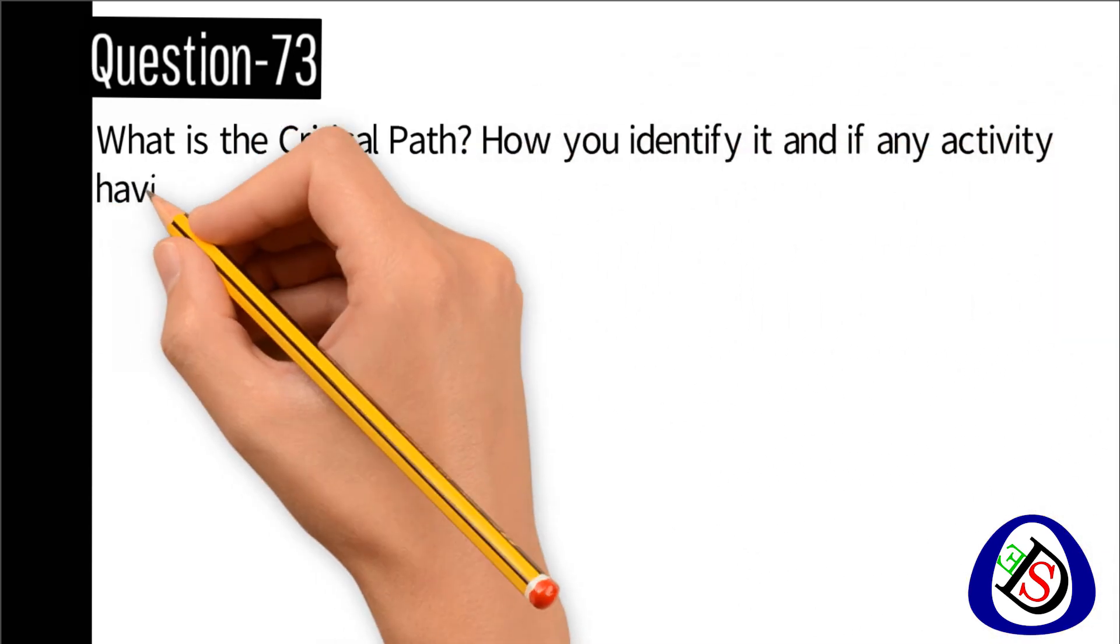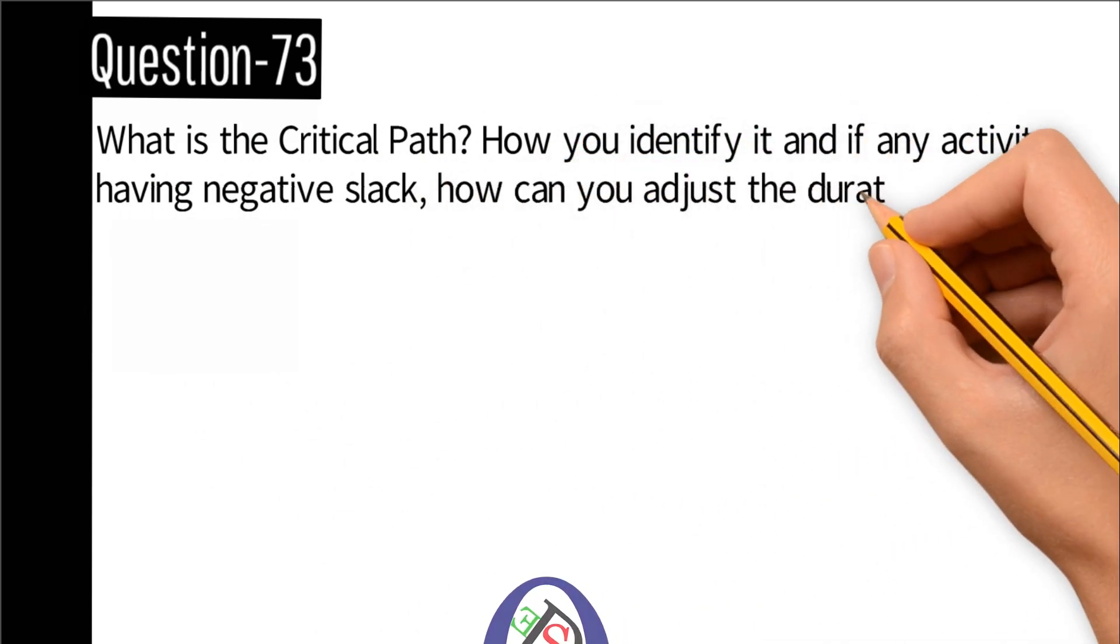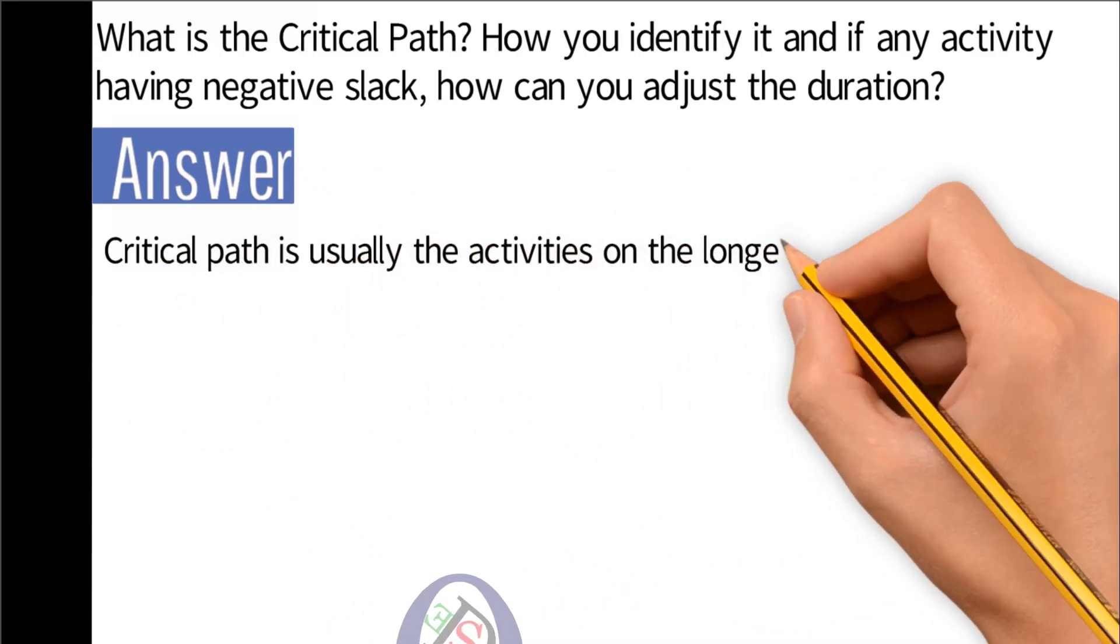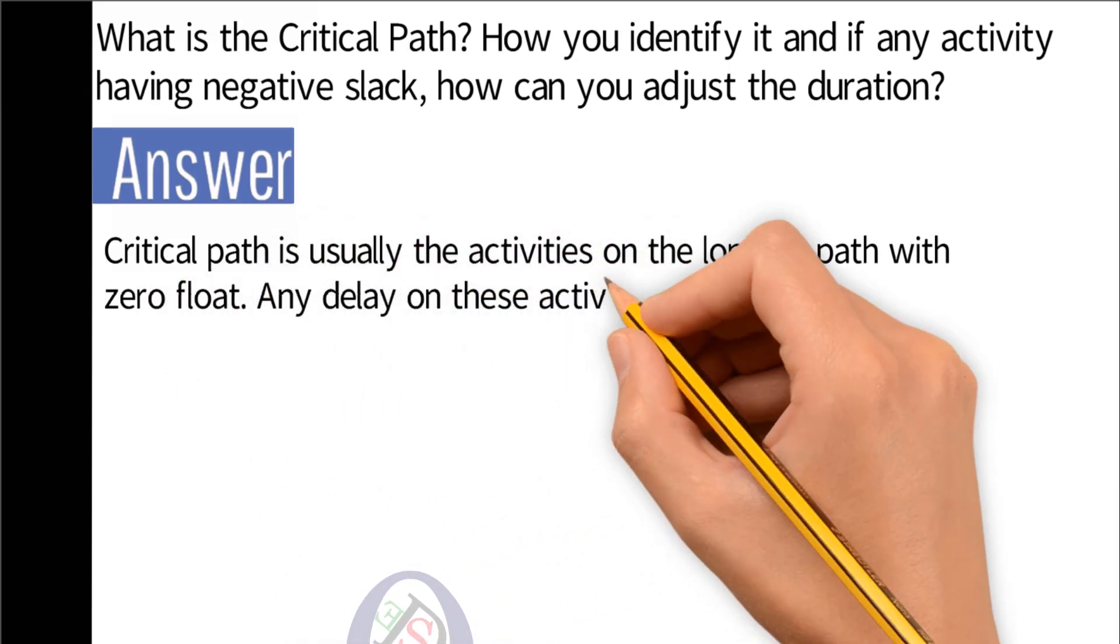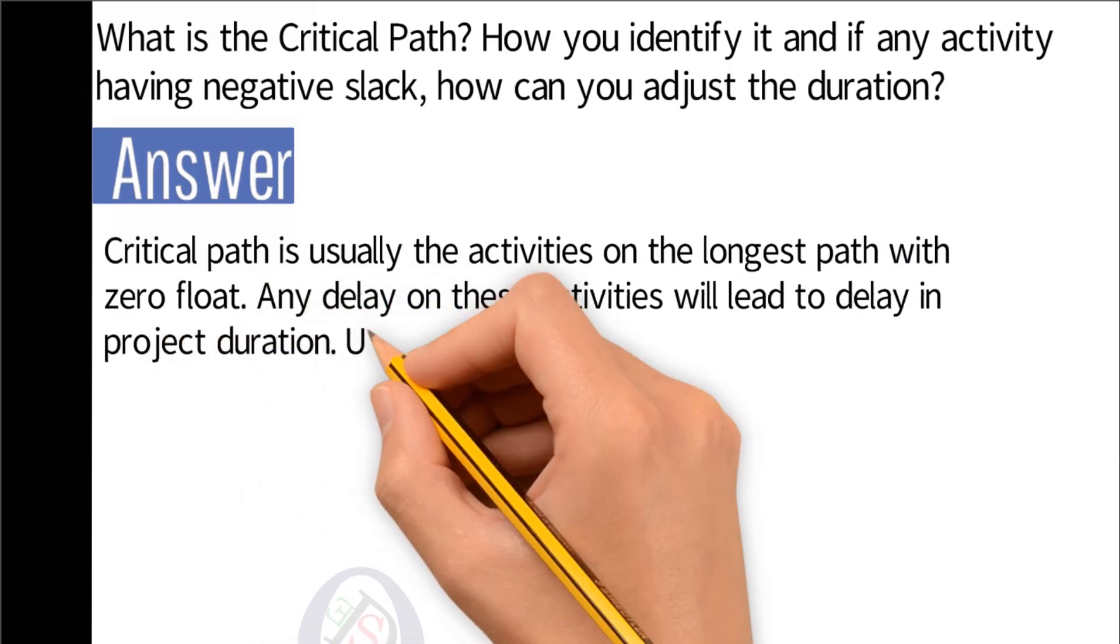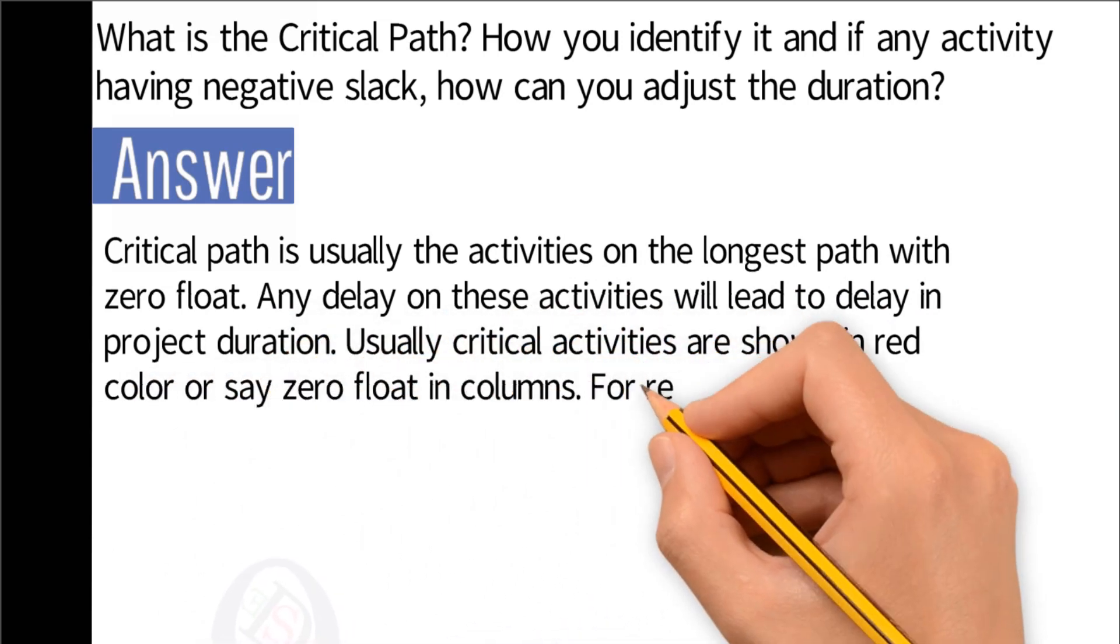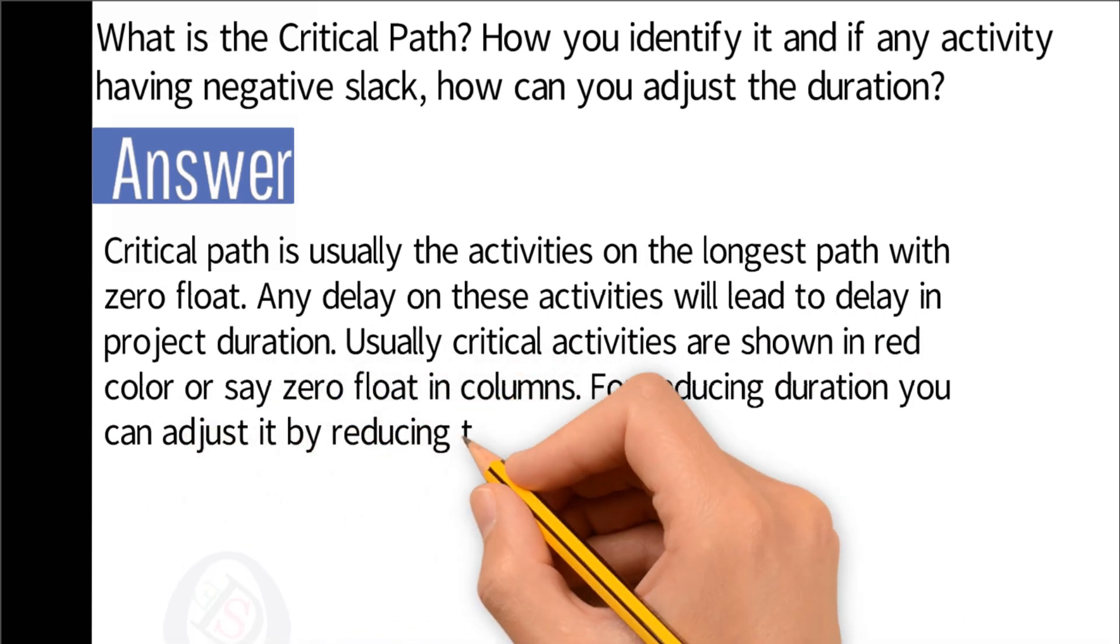Question number 73: What is the critical path? How do you identify it? And if any activity has negative slack, how can you adjust the duration? Answer: Critical path is usually the activities on the longest path with zero float. Any delay on these activities will lead to delay in project duration. Usually critical activities are shown in red color or say zero float in columns.